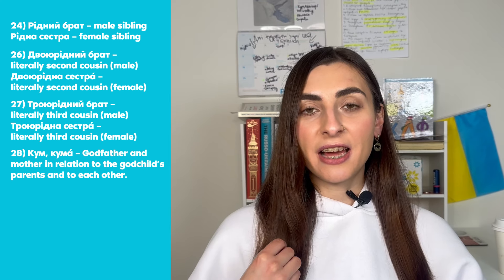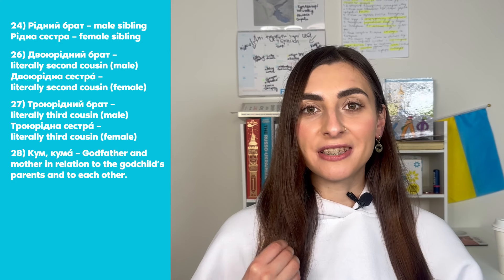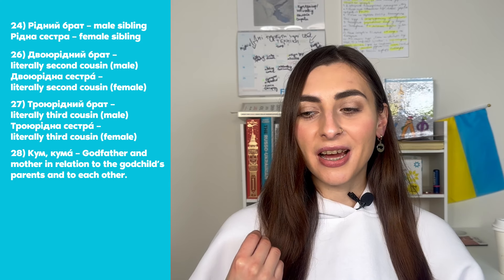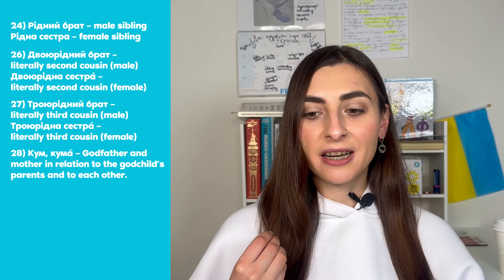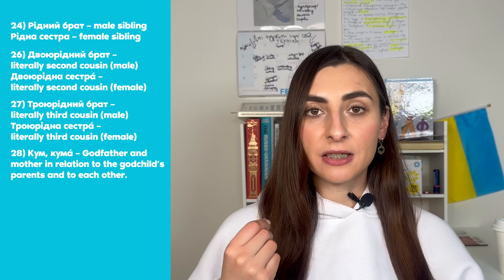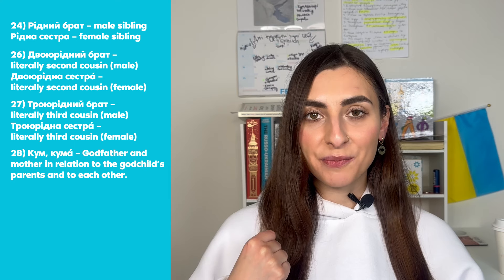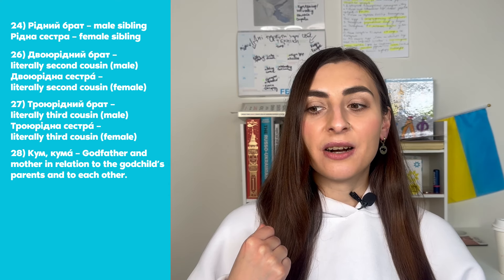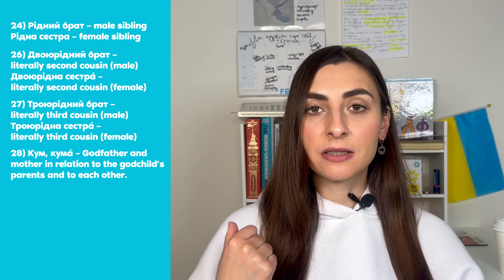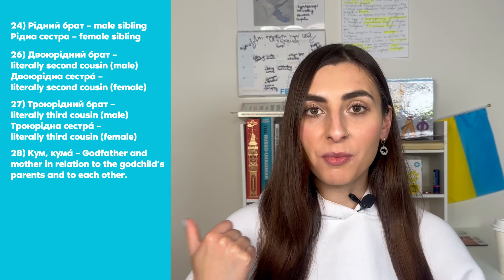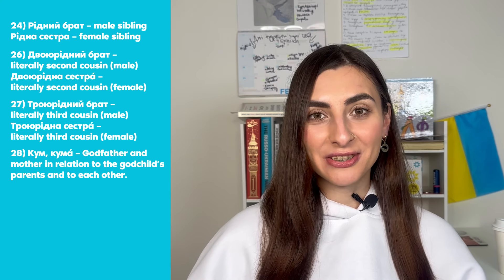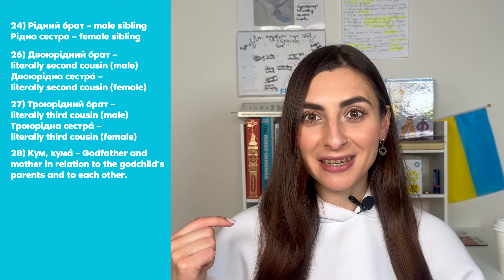Let me explain. I have a friend — her name is Ліза — and she has a daughter named Соломія. I am her godmother, so я її хрещена, or хрещена мама. And Соломія is my хрещениця — my goddaughter. So what is my relation with Ліза? She is my friend, but because I am godmother of her child, Ліза is my кума and I am also her кума. And Ліза's husband is my кум, and to Ліза's husband I am his кума.